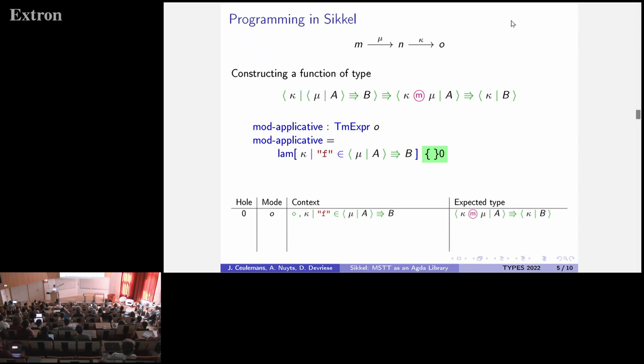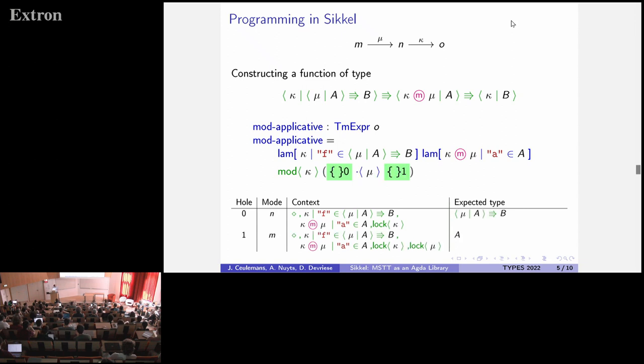So now we need to produce still a modal function. So again, we use modal lambda abstraction, but this time with the composition of kappa and mu as modality. And we extend our context again. And then we want to construct a term of type kappa B, which we can do using the modal constructor mod kappa. And the effect of that is that we need to give a term of type B, but we lock our context with the modality kappa. So we end up in this situation. And so to produce a term of type B, we actually want to apply this function F to A, but we cannot do that directly because F is a modal function. So we use modal function application. And the effect of that is that the argument will be type checked in a context locked with the modality mu. So now we end up in this situation.